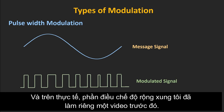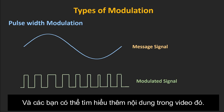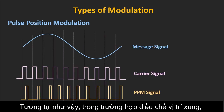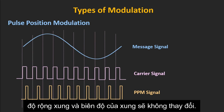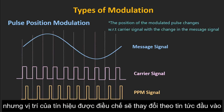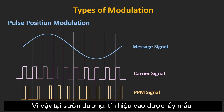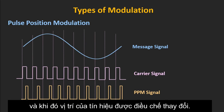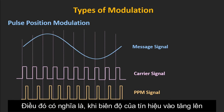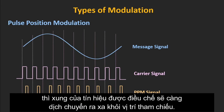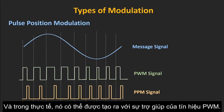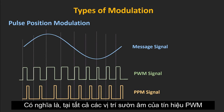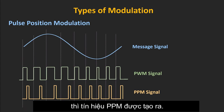There is already a separate video on pulse width modulation for more information. In pulse position modulation, the width and amplitude of the pulse remain fixed, but the position of the modulated signal changes according to the input signal. At each rising edge, the message signal is sampled, and based on the amplitude of the input signal, the position of the modulated signal changes. As the amplitude of the input signal increases, the modulated pulse moves further away from the reference position. It can be generated using the PWM signal — by generating a pulse at every falling edge of the PWM signal, the PPM signal can be generated.